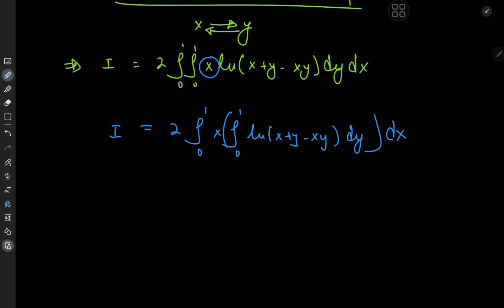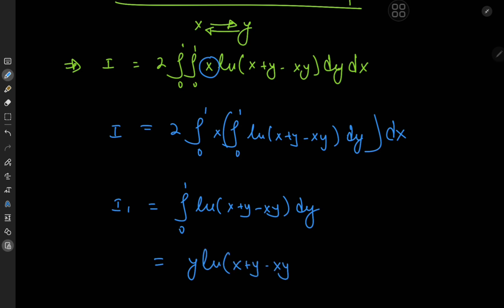I can evaluate this integral with respect to y quite nicely using an integration by parts approach. Let's call this I₁, the integral from 0 to 1 of natural log(x plus y minus xy) dy. We're holding x constant and integrating with respect to y. On integration by parts, I get this y term times the logarithm of x plus y minus xy, with limits 0 and 1, minus the integral from 0 to 1, with integrated function being y, and we need the derivative of this logarithmic function with respect to y, which gives x plus y minus xy in the denominator.